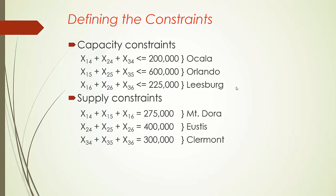Next, let's look at the supply constraints. Using Mount Dora location 1 as our example: how many bushels of citrus will be shipped out of location 1? It's going to be the sum of bushels shipped to locations 4, 5, and 6 from Mount Dora — that is, x14 plus x15 plus x16. The supply availability in Mount Dora is 275,000 bushels, so the first supply constraint is: x14 plus x15 plus x16 equals 275,000.